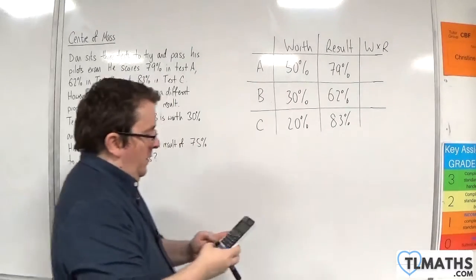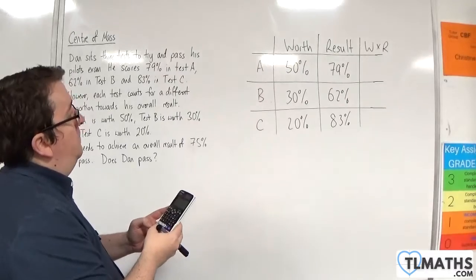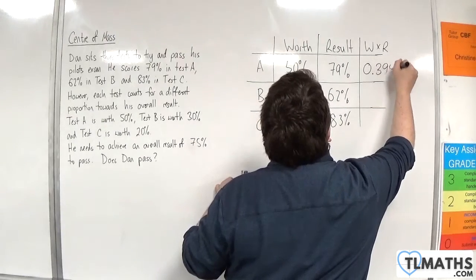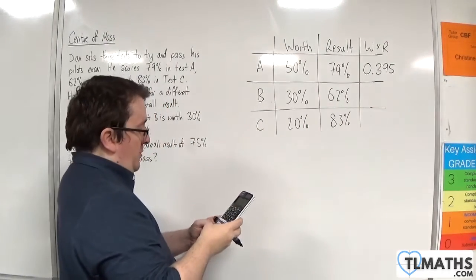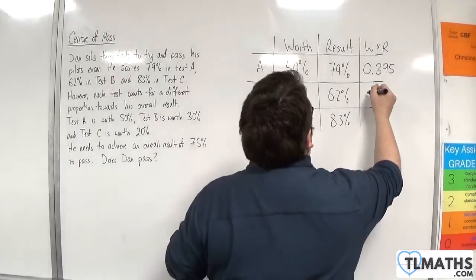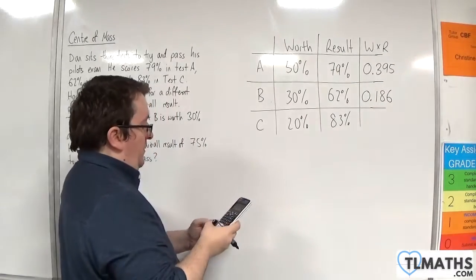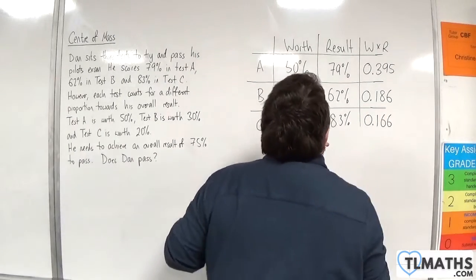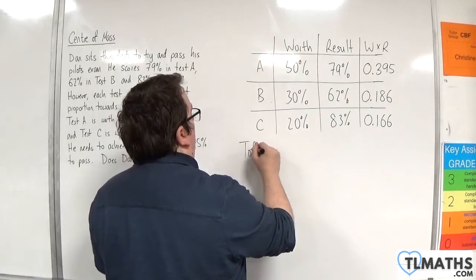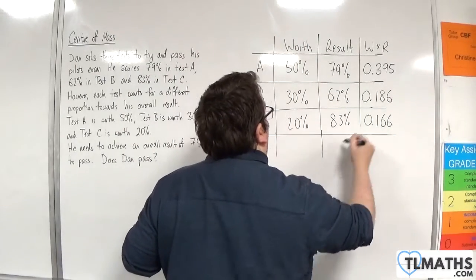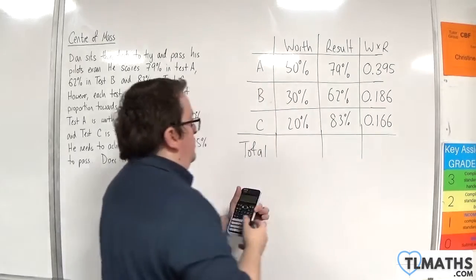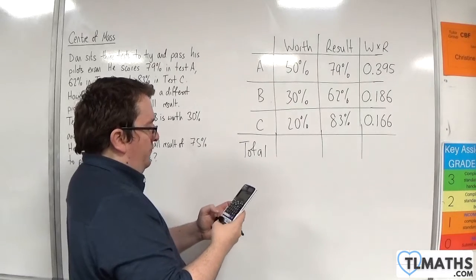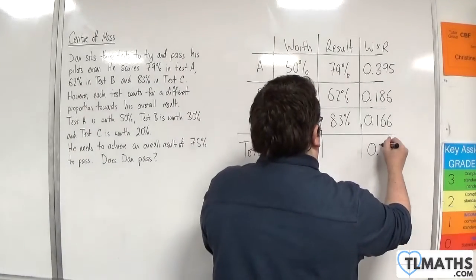So we would have 0.5 times 0.79, so 0.395. You would have 0.3 times 0.62, which is 0.186. And then you would have 0.2 times 0.83, which is 0.166. And once you've got all of those results, you would add them together and find the total. So 0.166 plus 0.186 plus 0.395, and we get 0.747.